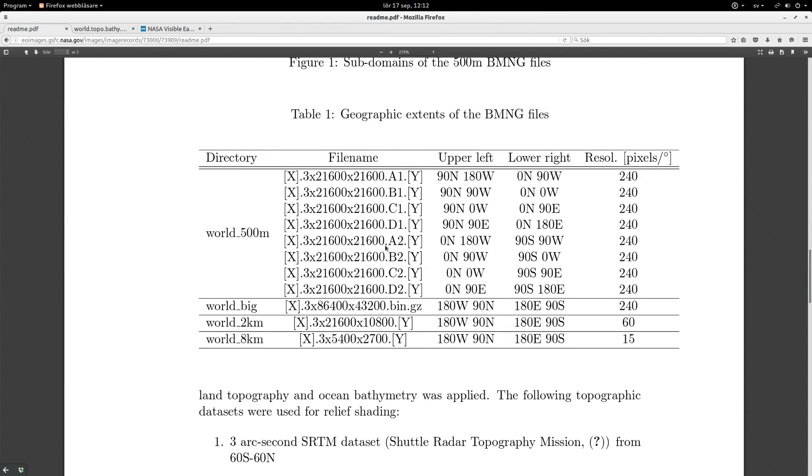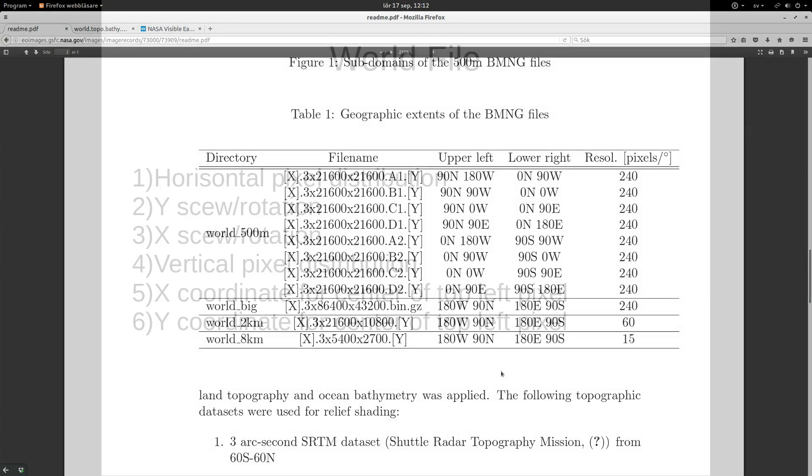A world file can be used with a raster file to place it correctly in a GIS. As long as the raster is oriented in a coordinate system and not rotated, this file is pretty easy to create yourself.